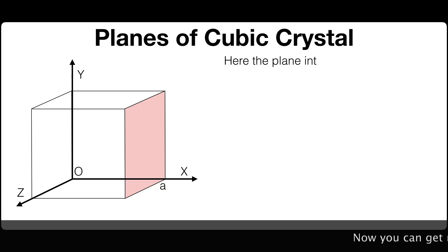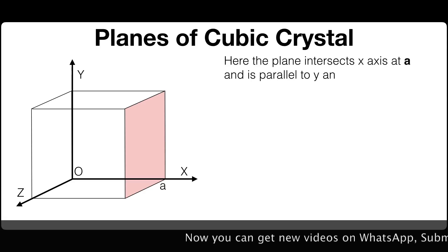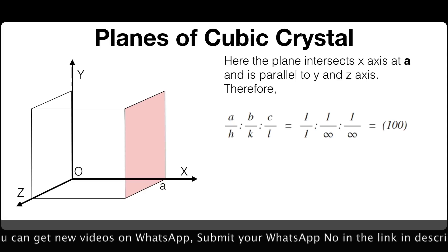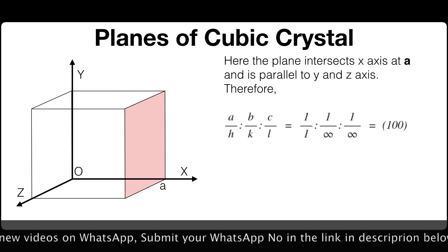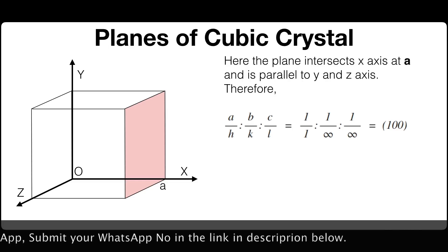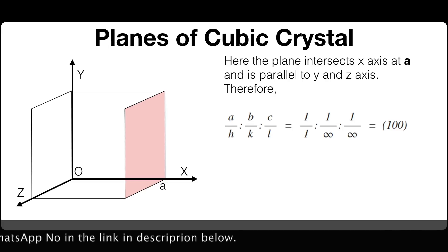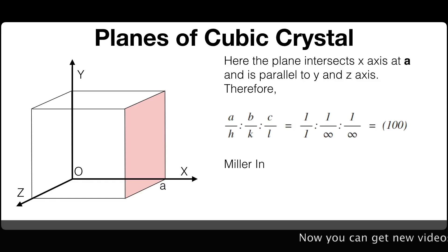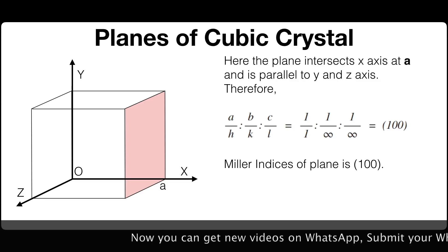Here the plane intersects the x-axis at A and is parallel to the y and z-axis. Therefore A/H : B/K : C/L = 1/1 : 1/∞ : 1/∞, which equals 1, 0, 0. So the Miller indices of this plane is (1 0 0).